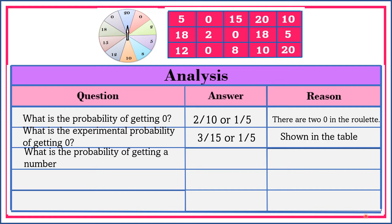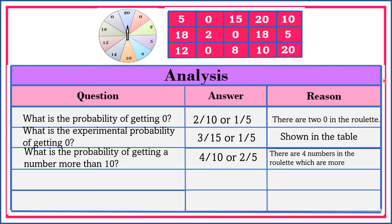What is the probability of getting a number more than 10? If the question is probability, let's refer our answer to the roulette. Let's count how many numbers are more than 10. We have 1, 2, 3, 4. Therefore, the probability of getting a number more than 10 is 4 over 10 or 2 fifths. There are four numbers in the roulette which are more than 10.